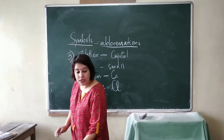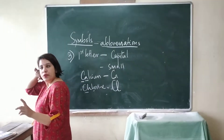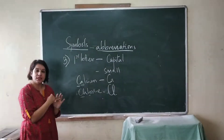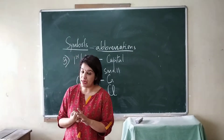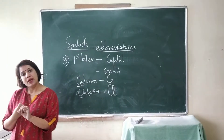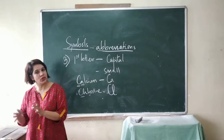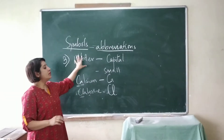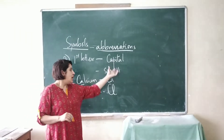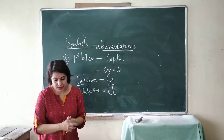So to summarize the rules: the first rule is we use the first letter of either the English name or the Latin name. The second rule is if the first letter is the same, then we use the second letter, third letter, and so on. The third rule is the first letter is always written in capital and the second letter is written in small letters.